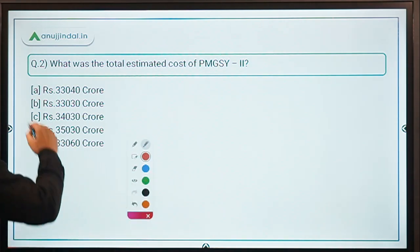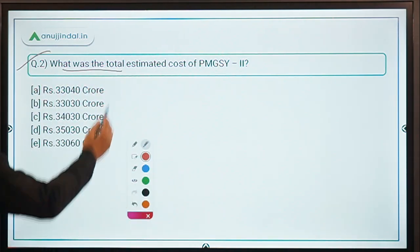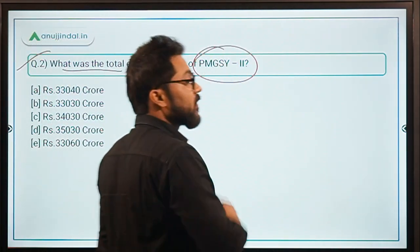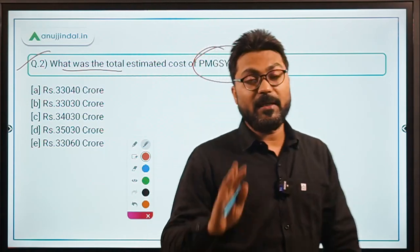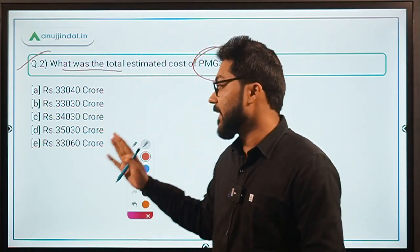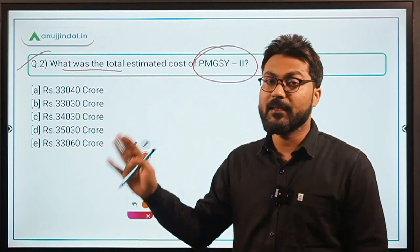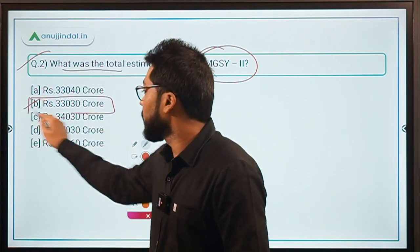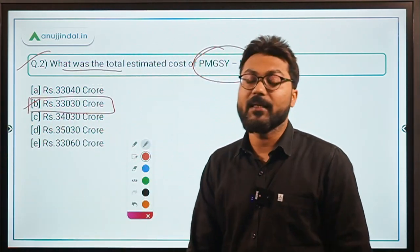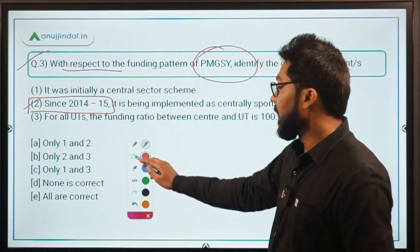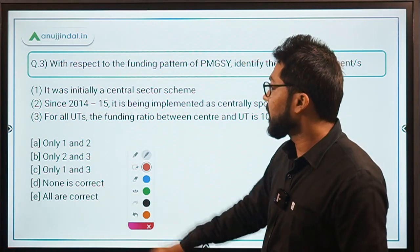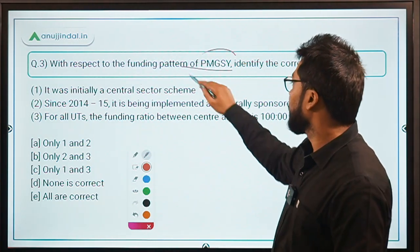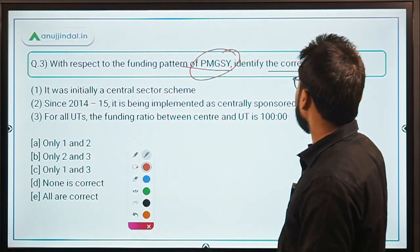Question 2: What was the total estimated cost of PMGSY-2? The correct answer is option B — Rs. 33,030 crores.